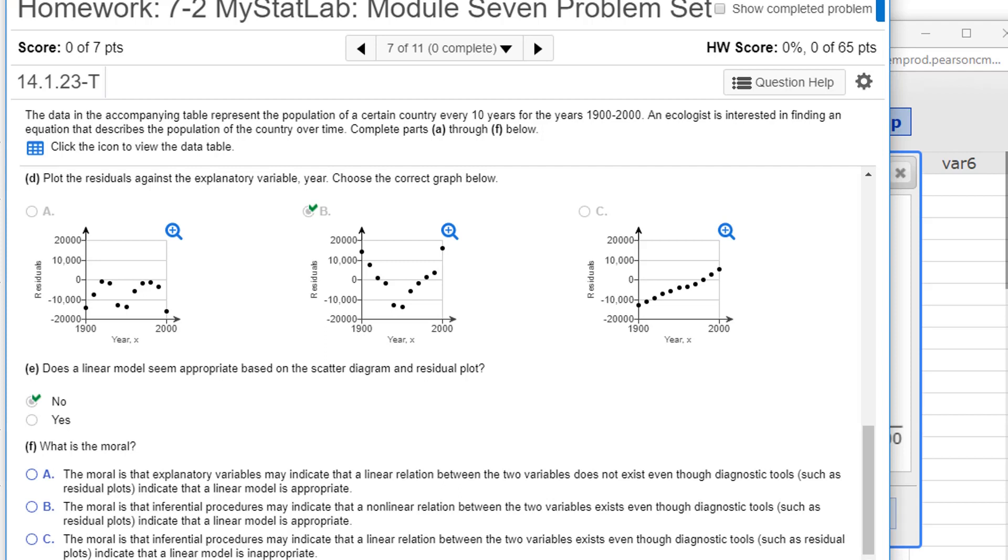And let's see, what is the moral? The moral is not A or B. Let's find C. The moral is that inferential procedures may indicate that a linear relation between two variables exists, though diagnostic tools such as residual plots indicate that the linear model is inappropriate. Yes. You may find that, so we found that the p-value was zero, which means, so that's the inferential procedure, the hypothesis test. It told us that there is definitely a significant relationship and that a linear model was... what it really is testing is, is a linear model better than nothing? And the answer is yes. However...